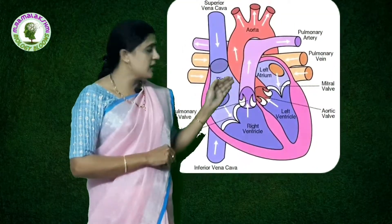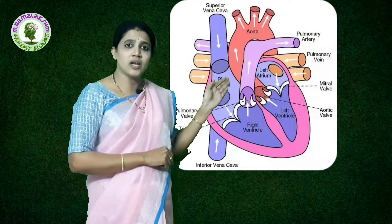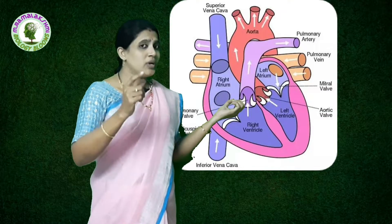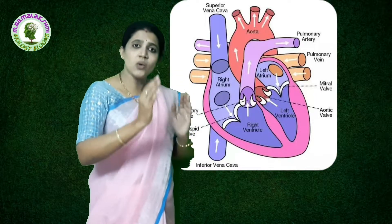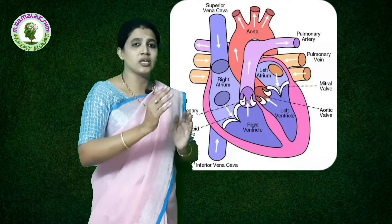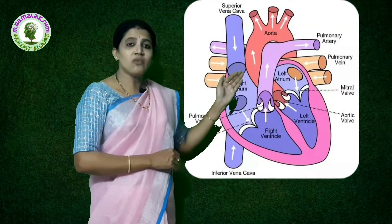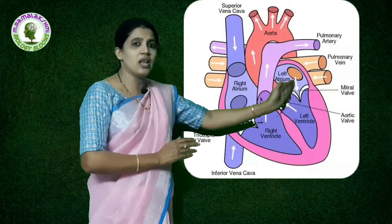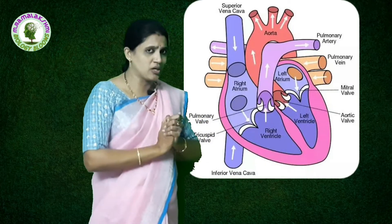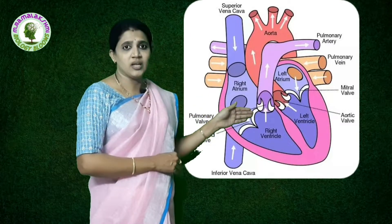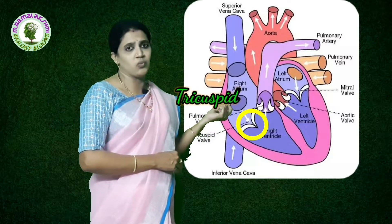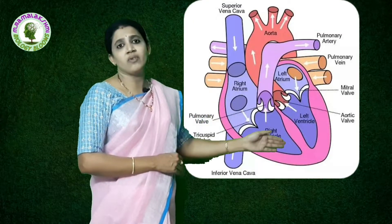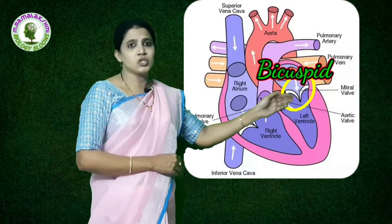The valves allow blood movement in only one direction and do not allow backward flow. Blood moves from right auricle to right ventricle, and left auricle to left ventricle only — there is no connection between right and left sides. The valve guarding the right auricle and right ventricle is called the tricuspid valve. The valve guarding the left auricle and left ventricle is called the bicuspid valve.